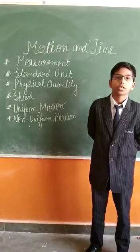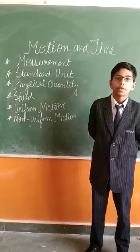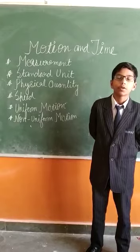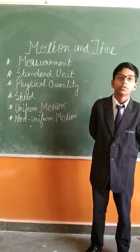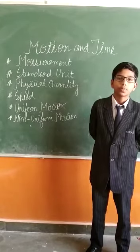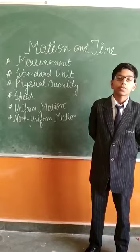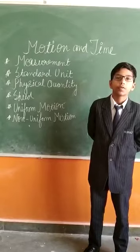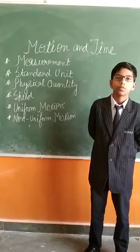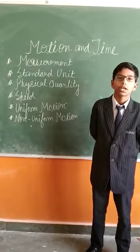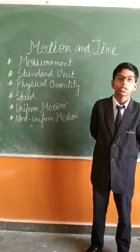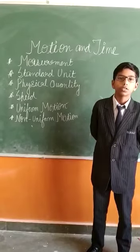Types of physical quantities. First, speed. The distance covered by a moving object in unit time is known as its speed. Types of speed — first, uniform motion: a body is said to be in uniform motion if it travels in a straight line and covers equal distance in equal intervals of time.